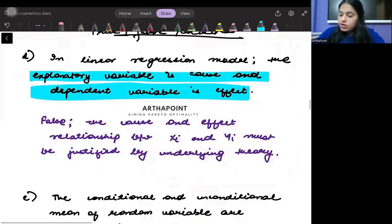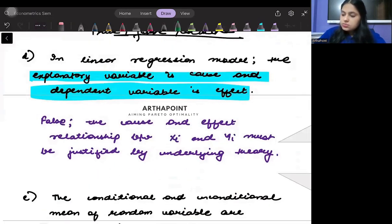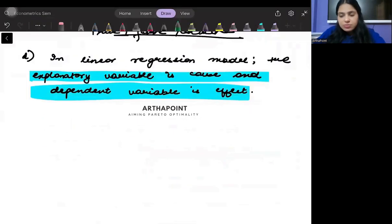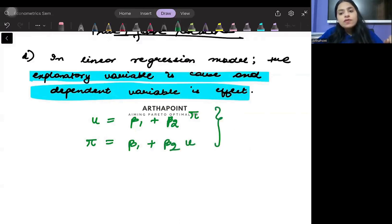According to regression, since it's just a mathematical thing, I can very well write unemployment as a function of inflation, and I can very well write inflation as a function of unemployment. Both of these models will be correct mathematically.